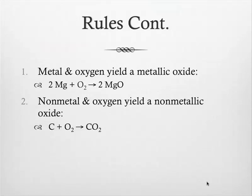Next, we have metal and oxygen which yields a metallic oxide. So for example, magnesium plus oxygen will yield magnesium oxide.